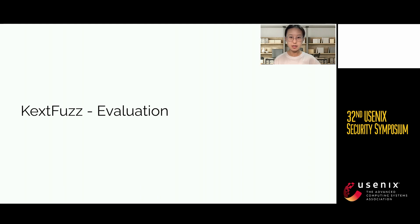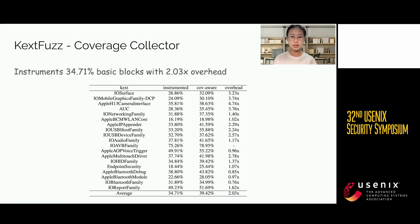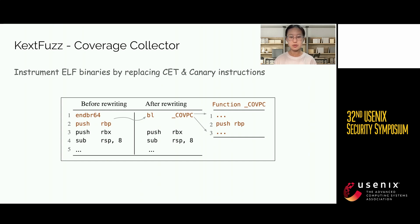In the evaluation part, we evaluated the overall performance of KXTFuzz and analyzed how much each part contributes to bug detection. KXTFuzz can instrument about 34% of basic blocks by replacing pointer authentication instructions. The coverage collection instrumentation introduces about two times overhead, although not all blocks are instrumented. The coverage information can generally reflect the depth and width of the fuzzer-tested code. This method can not only be used in Apple Silicon MacOS kernel extensions — mitigation instructions like Intel CET and Canary can also be replaced. We have successfully instrumented Linux user-space binaries in a similar way.